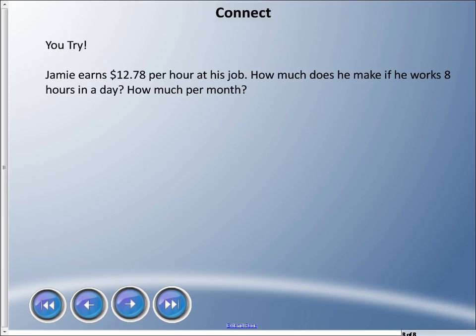Let's try one more. Jamie earns $12.78 per hour at his job. How much does he make if he works 8 hours in a day? I'm going to go a little bit further. How much does he make per month? Now this is a real life problem because all of you will go work and you will make money per hour to start off for sure. You typically work 8 hours a day, so you might want to figure out before taxes how much you're going to be making. Take a couple minutes because you're going to want to do this in real life.